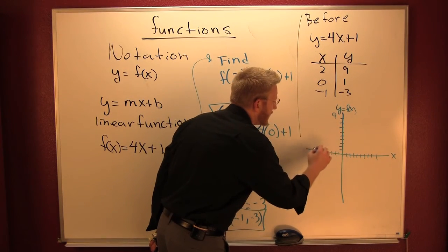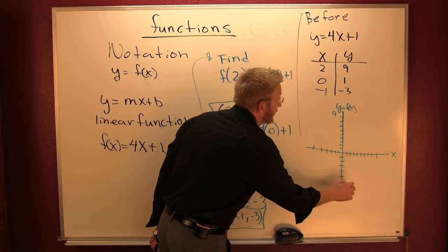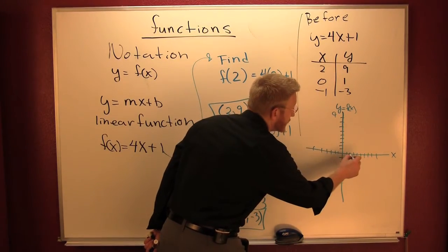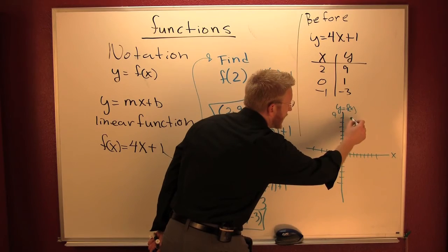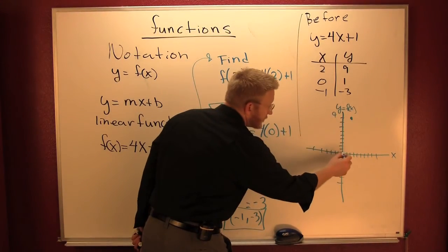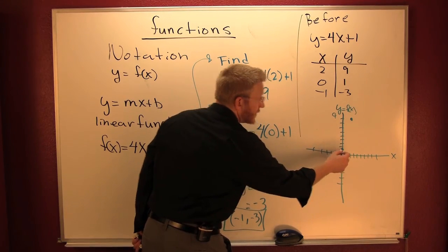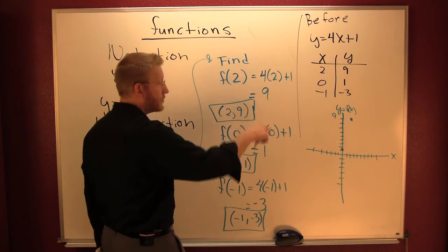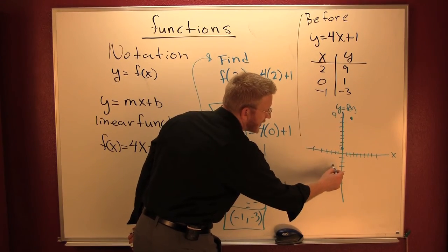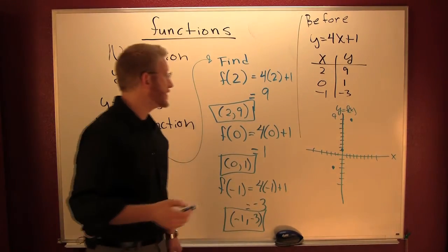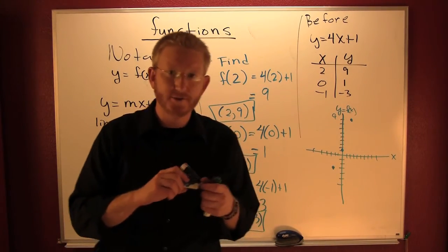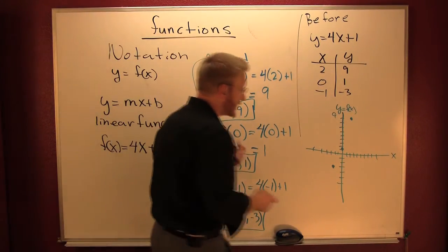I've got the point (2, 9) on there. I've got the point (0, 1) on there. And I've got the point (negative one, negative three). Do they lie on a straight line? Yes they do. So then what do you do? Connect the dots.